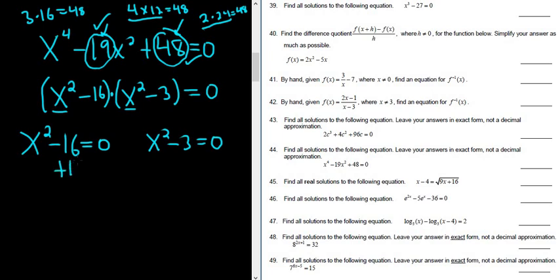Now here we add 16 to both sides, plus 16, plus 16, so we get x squared equals 16. And here we add the 3, plus 3, plus 3, so we get x squared equals 3.